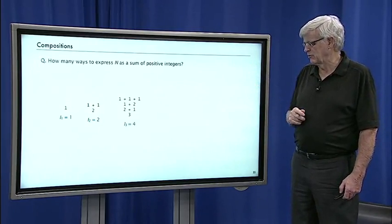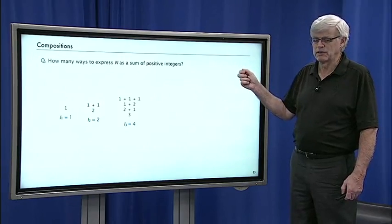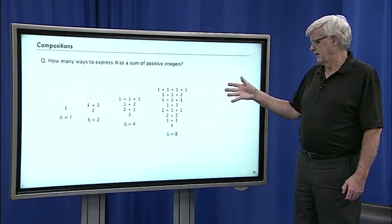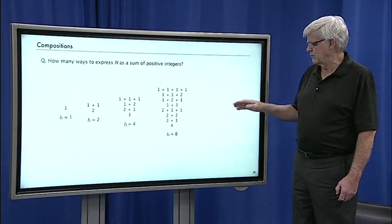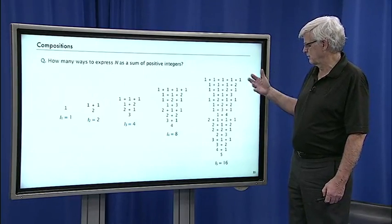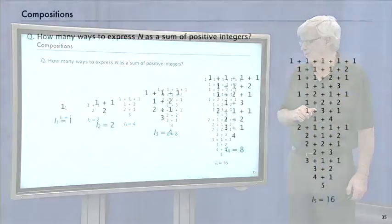So 2 could either be 1 plus 1 or 2. 3 could be 1 plus 1 plus 1 or 1 plus 2 or 2 plus 1 or just 3. There's 8 ways to express 4 as a sum of positive integers and 16 ways to express 5 as a sum of positive integers.